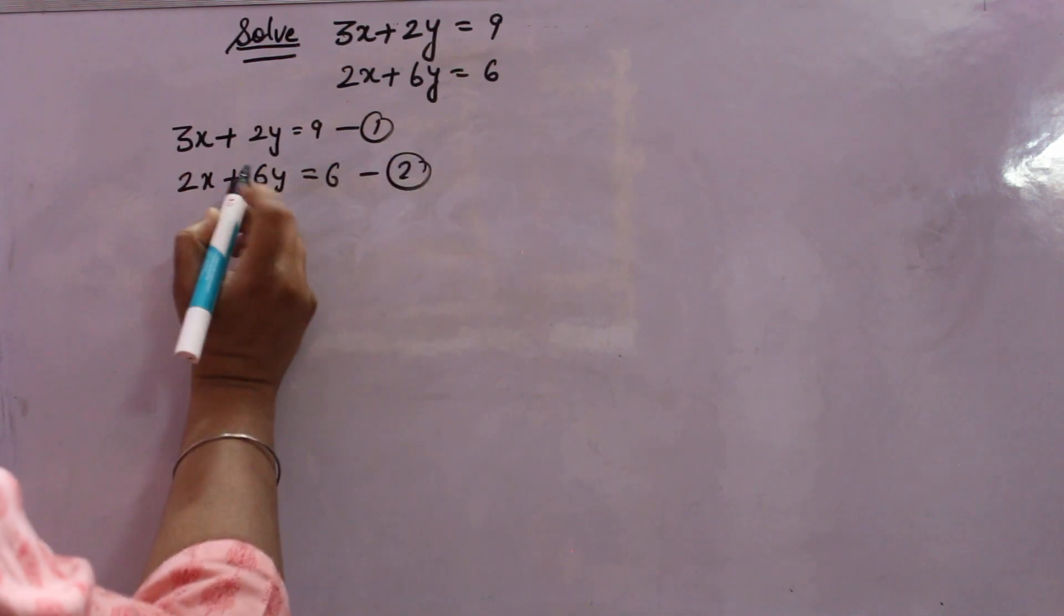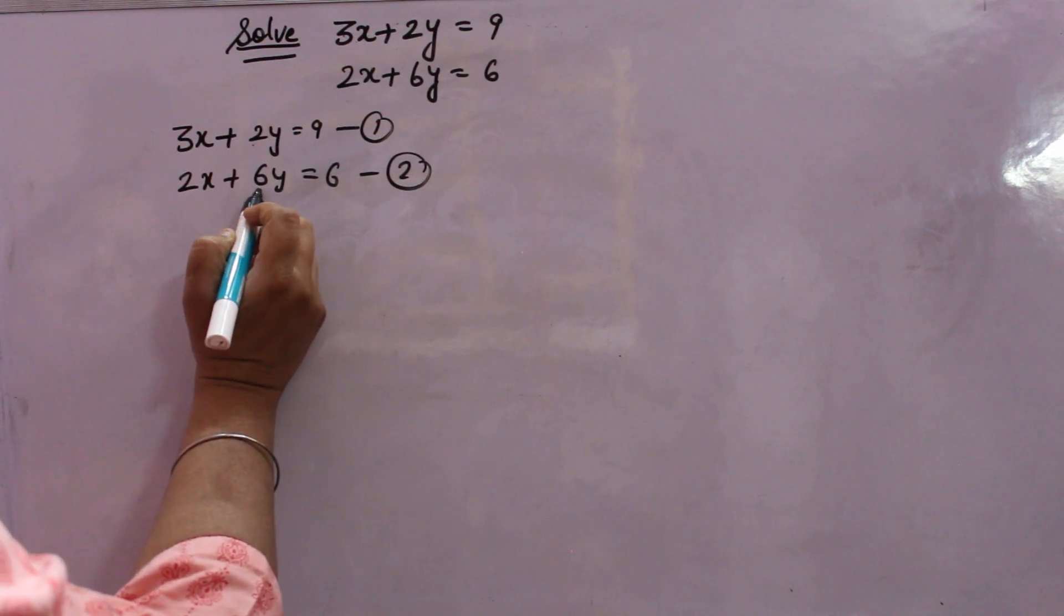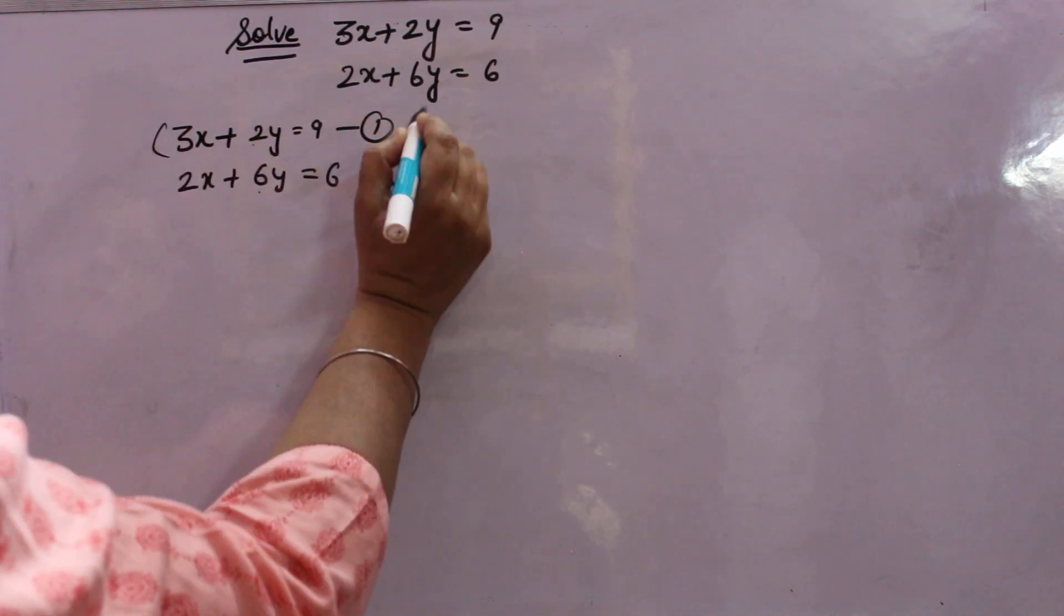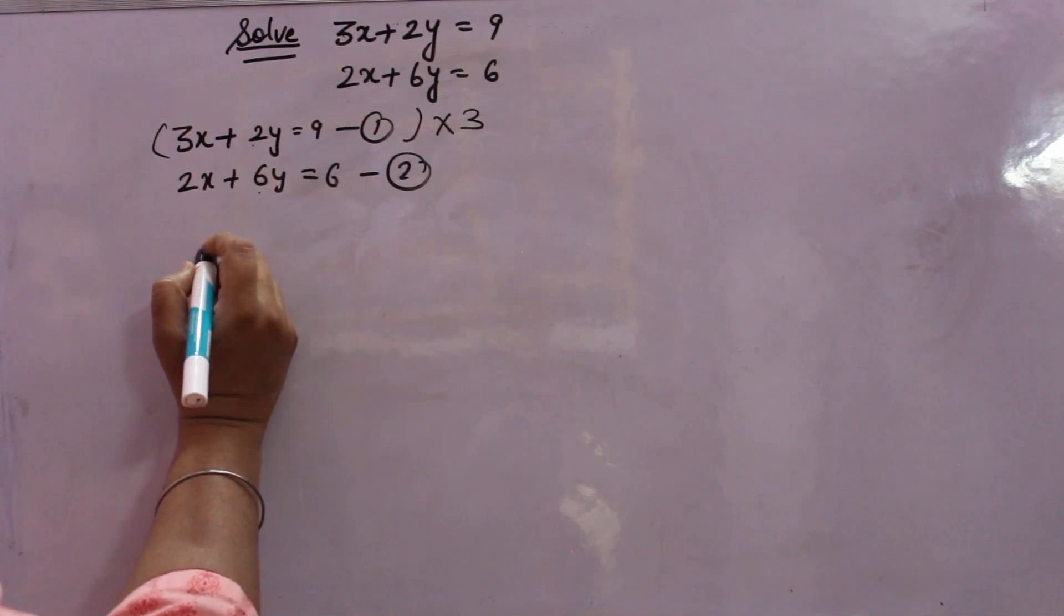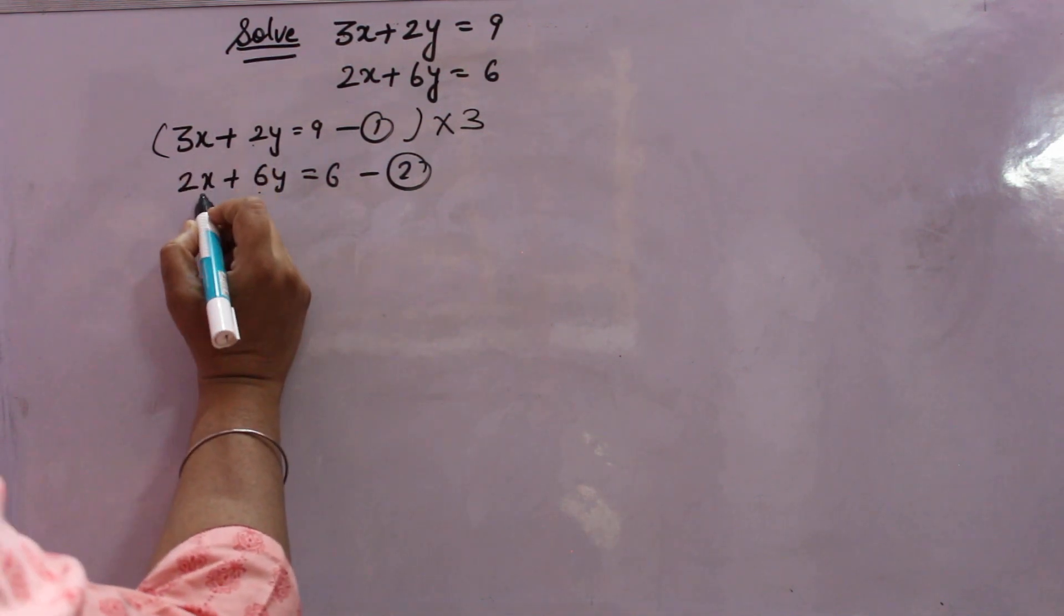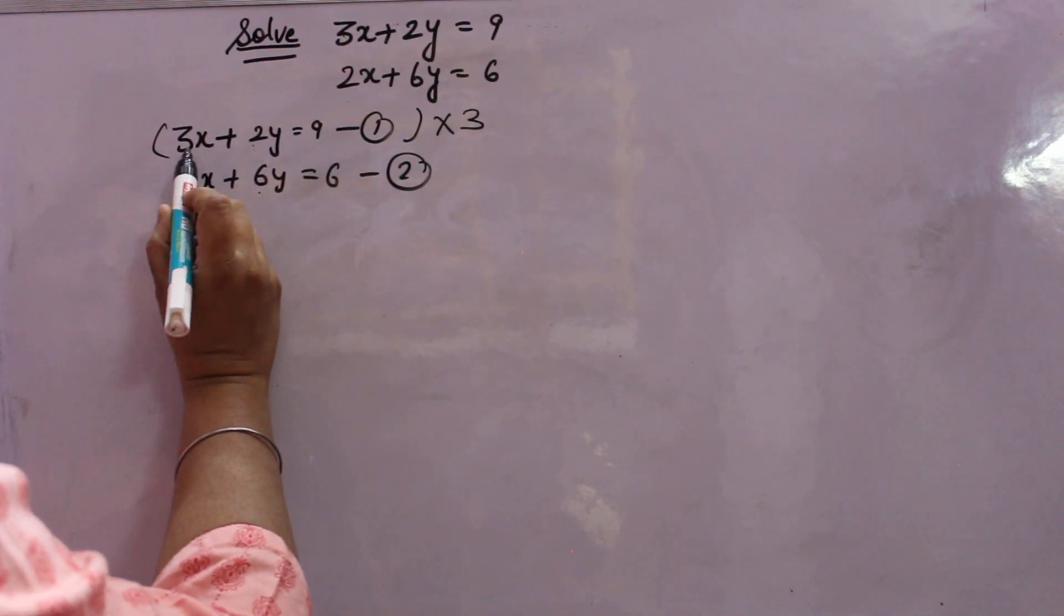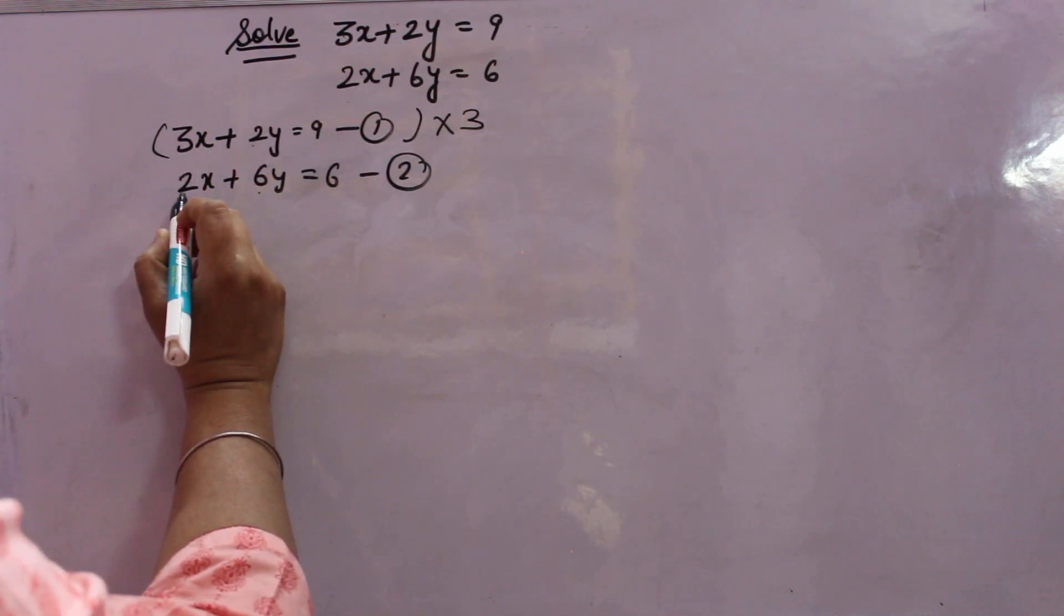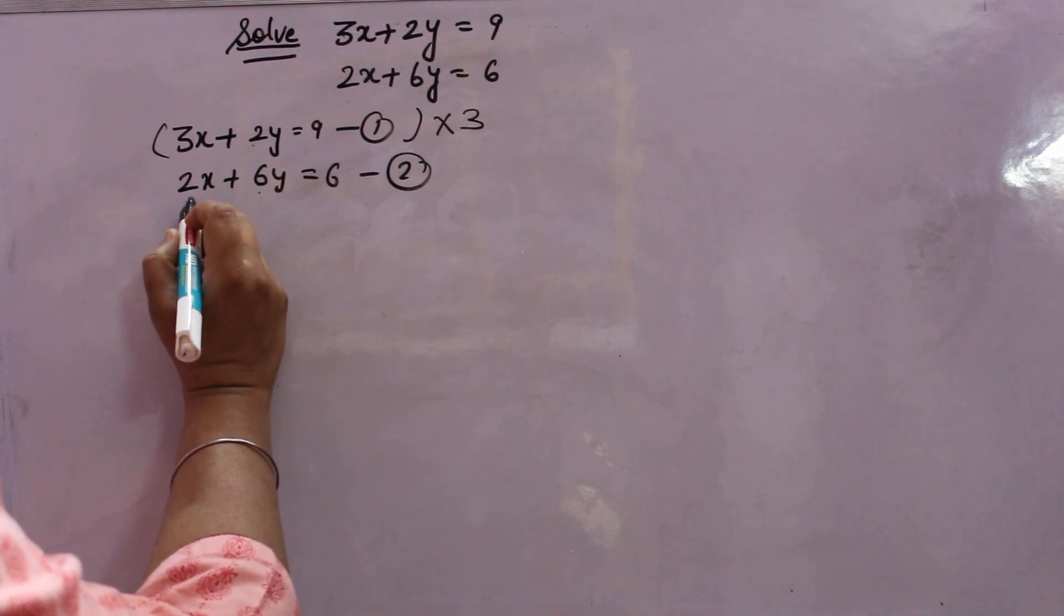Now see the equation carefully. Coefficient of y is here 2, and here coefficient of y is 6. So, first equation, if you will multiply by 3, coefficient of y will become equal. Otherwise, you can do like this also. First, you can multiply by 2 to make the coefficient of x is 6, and second equation you can multiply by 3 to make the coefficient of x is 6 by making them equal.